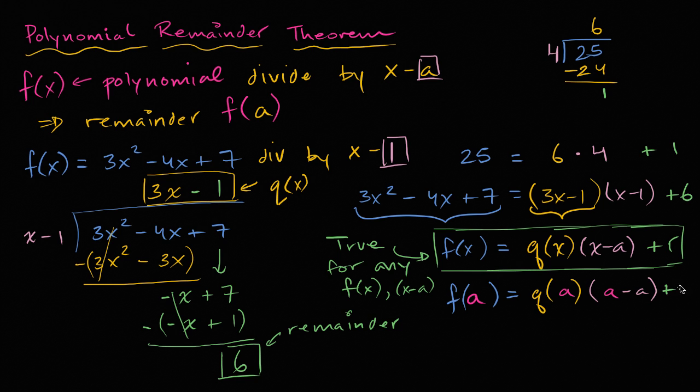Minus a plus r. Well, what's that going to be equal to? What's all this business going to be equal to? Well, a minus a is zero. And q of a, I don't care what q of a is, if you're going to multiply it by zero, all of this is going to be zero.